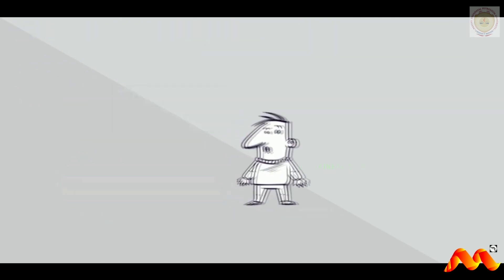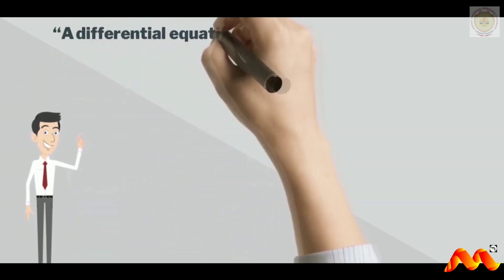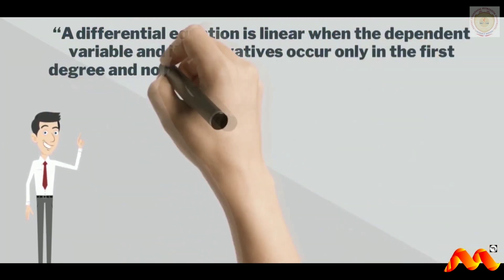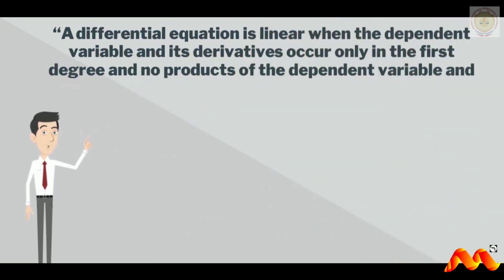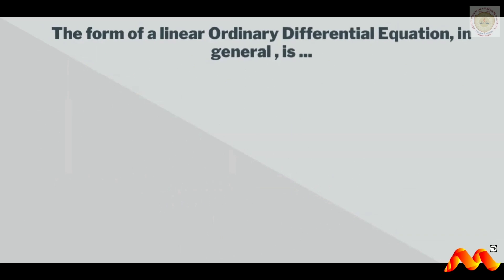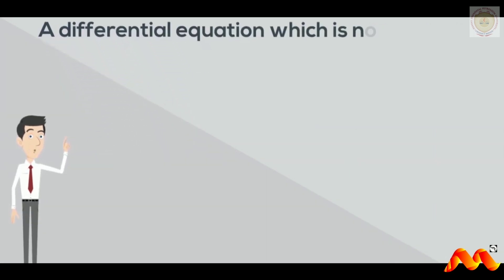A differential equation is linear if the dependent variable and its derivatives occur only in the first degree and no products of the dependent variable and its derivatives of various orders occur. The general form of a linear ordinary differential equation is: y^(n) + c₁y^(n−1) + c₂y^(n−2) + ... + c_{n−1}y' + c_n·y = r(x). A differential equation which is not linear is called a nonlinear differential equation.